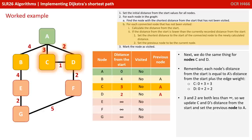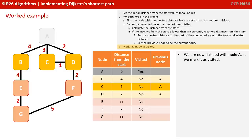We're now finished with node A, so we mark it as visited. We go back to the top and find the node with the shortest distance from the start that has not yet been visited. That's D, with a distance from start of 2.